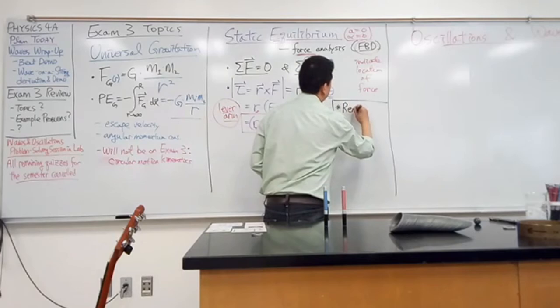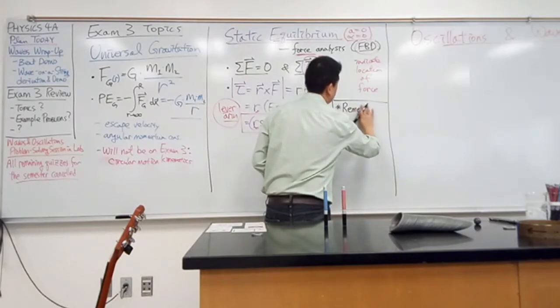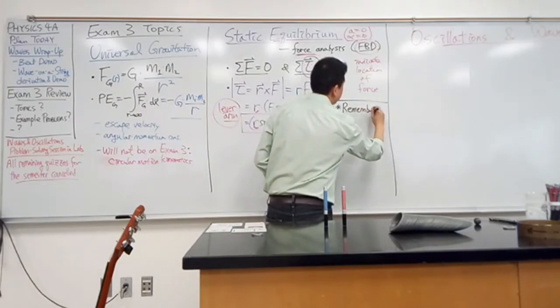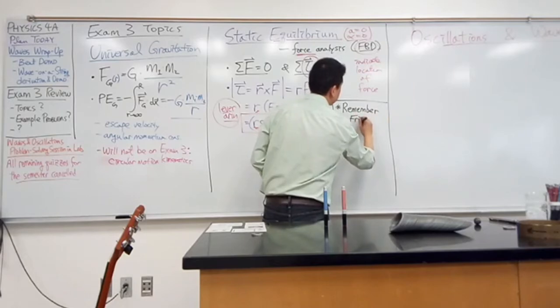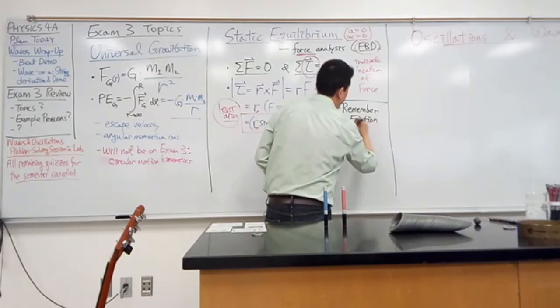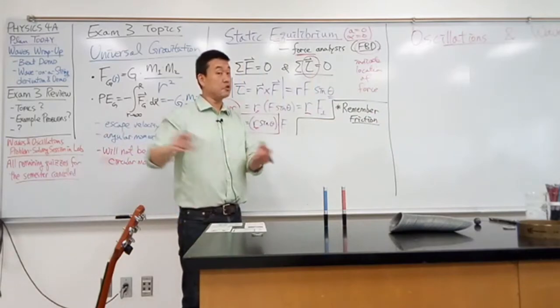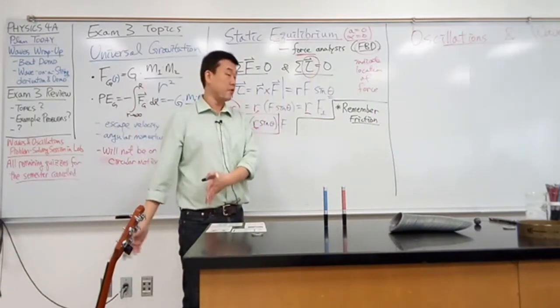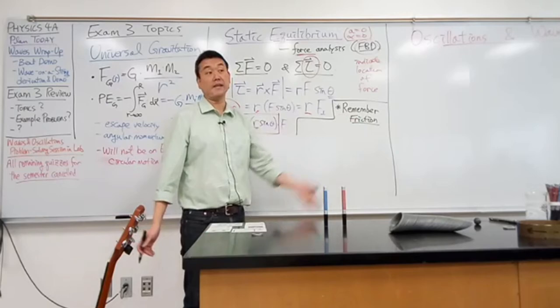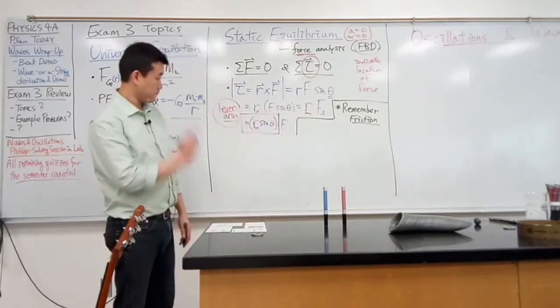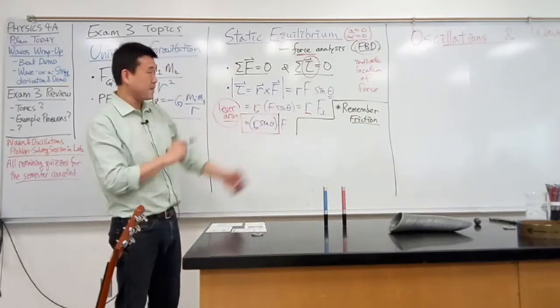My mantra has been in this class, we always ignore friction unless you can't. This is one of the common situations where you cannot ignore friction. To actually explain what happens, you will often need to bring in friction, static friction to explain it. Remember friction. Even when the problem doesn't explicitly mention it, you will often have to bring in friction to explain what you see. You have to assume that there must be friction. If there's no friction, things should have just slid.